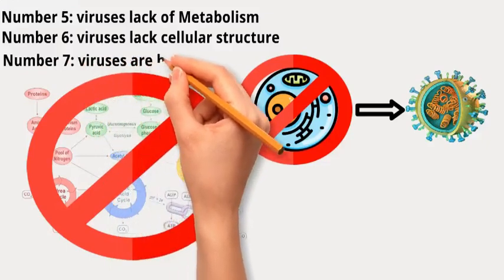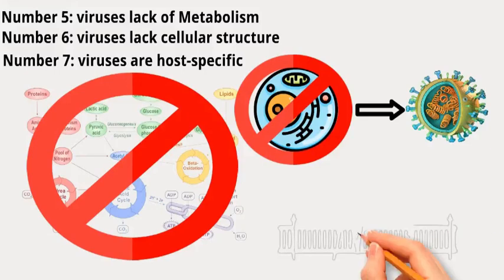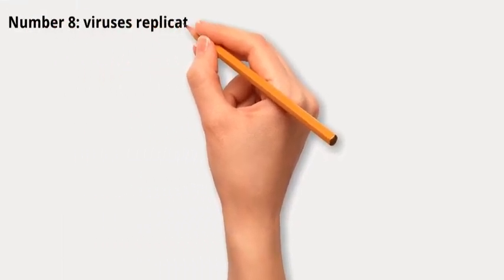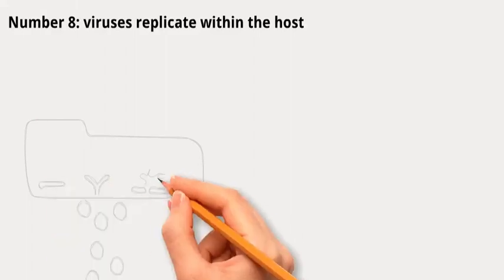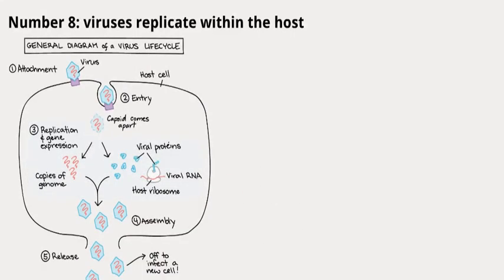Number seven: viruses are host specific. Each virus has a specific host range, meaning it can only infect certain types of cells or organisms. This specificity is determined by the interaction between viral surface proteins and specific receptors on the host cell surface. Number eight: viruses replicate within the host. In the first type of infection, the virus takes over the host cell's machinery and uses its materials to create new viral genetic material and proteins.